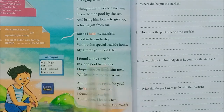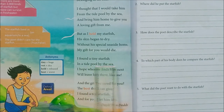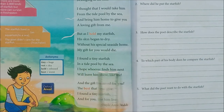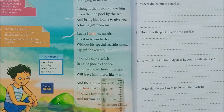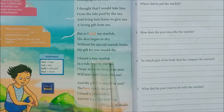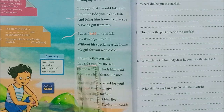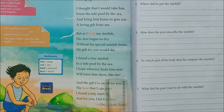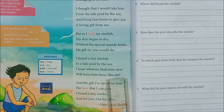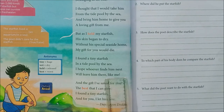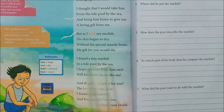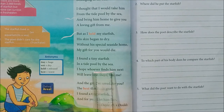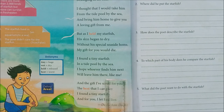'I found a tiny starfish in a tide pool by the sea. I hope whoever finds him next will leave him there like me.' In this stanza, the speaker again says he found a small starfish in the tide pool by the sea. He hopes that if someone else finds the starfish, they will leave it in the same place — they won't take the starfish with them, just like he did.